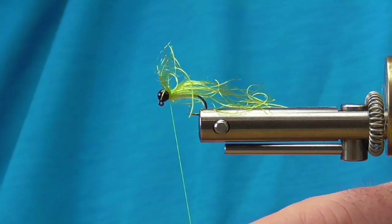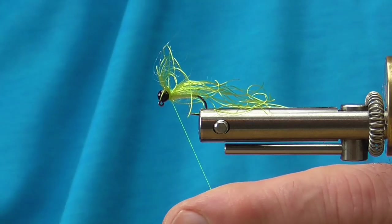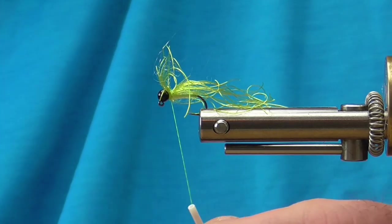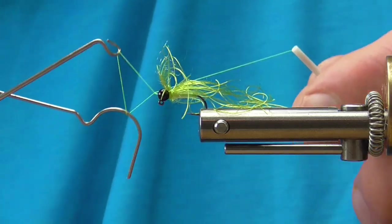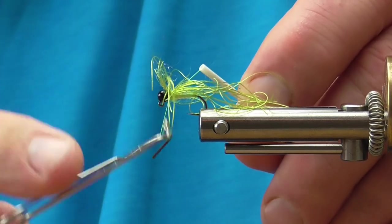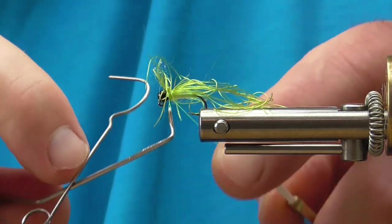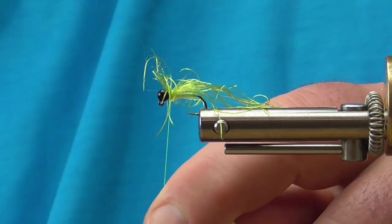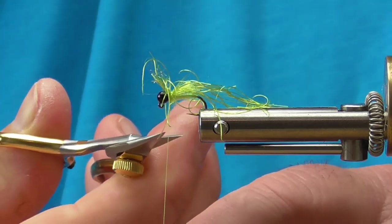The reason we're doing it on top of the hook is this is going to ride in the opposite direction. So the hook point is going to actually be riding up and this shaggy dubbing will be riding down.